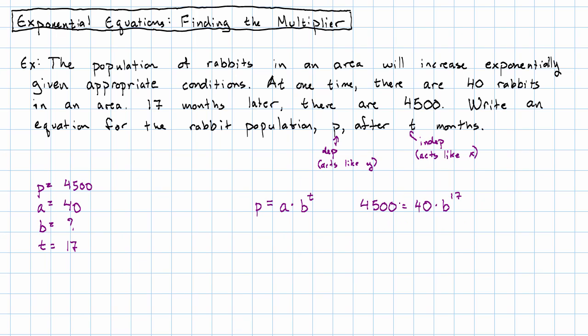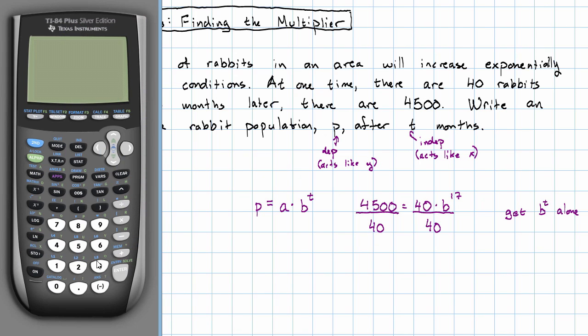The first thing we want to do is get rid of this 40, so we'll divide both sides by 40. We're getting B to the T alone on one side of the equation.